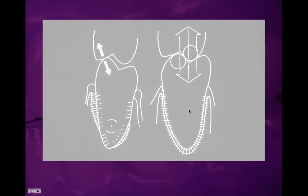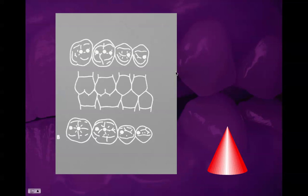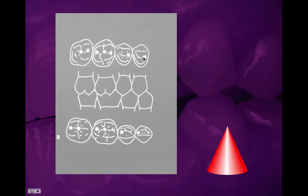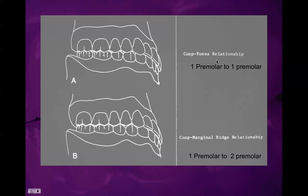On the maxillary teeth, the mesial fossa is functional, whereas on the mandibular teeth, the distal fossa is the functional one. In cusp-fossa, one premolar contacts one premolar directly. In cusp-marginal ridge, everything shifts slightly mesially so that the mandibular first premolar cusp tip sits at the marginal ridges and contacts both marginal ridges.